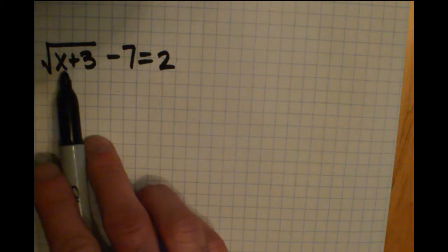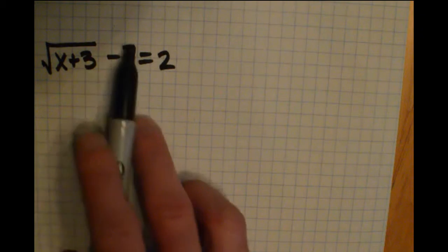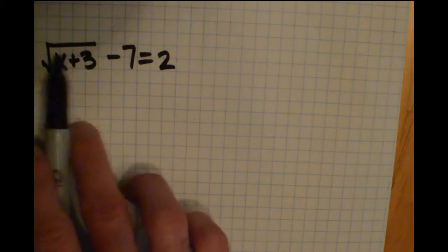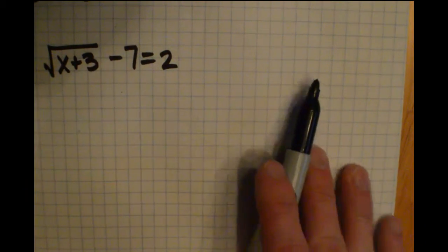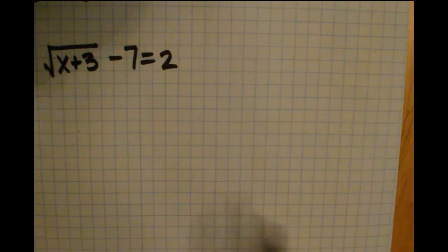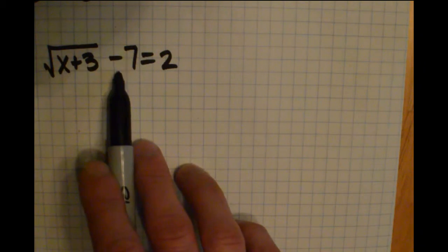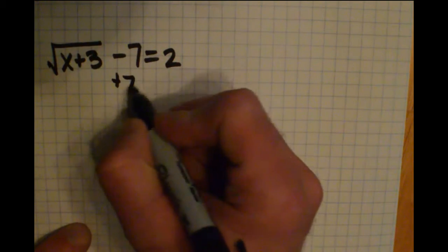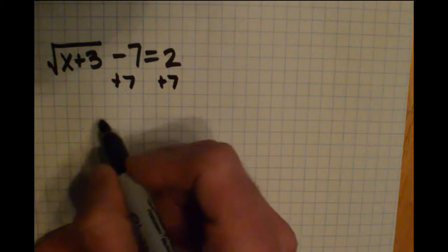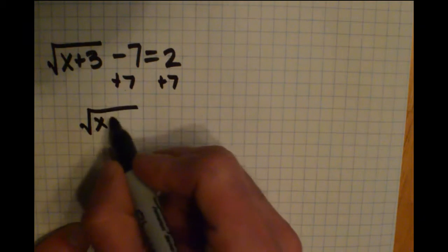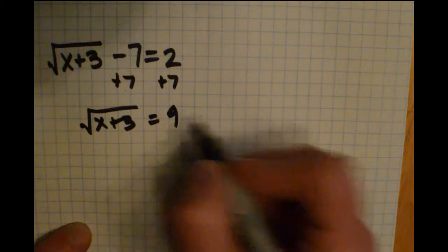most likely on the left side. So I want to get rid of this plus 3, I want to get rid of this minus 7, I want to get rid of this square root. So let's think about what operation we could do to both sides. Well, the first thing I can get rid of here is this minus 7 that's on the outside. And I can get rid of that by adding 7 to each side. That's going to leave us with x plus 3 equals 2 plus 7 is 9.